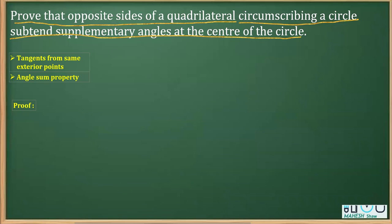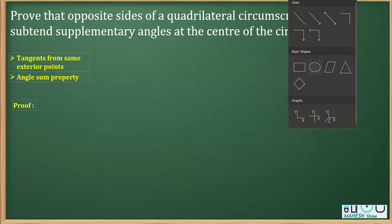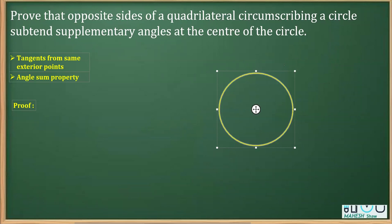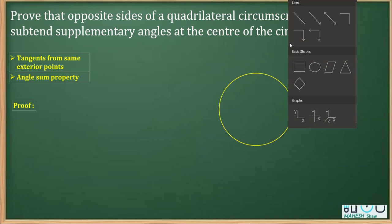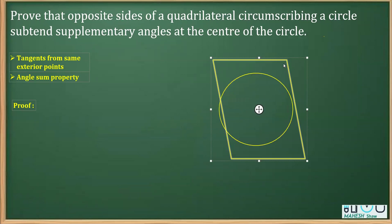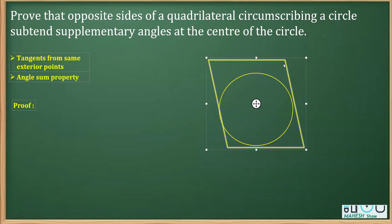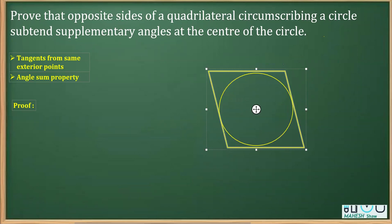We need to draw the figure to understand this better. First, draw a circle, then draw a quadrilateral circumscribing it. Make sure when you draw the quadrilateral, its sides touch the circle, so that we can call them tangents. This quadrilateral ABCD is touching the circle at all edges and acting as a tangent.